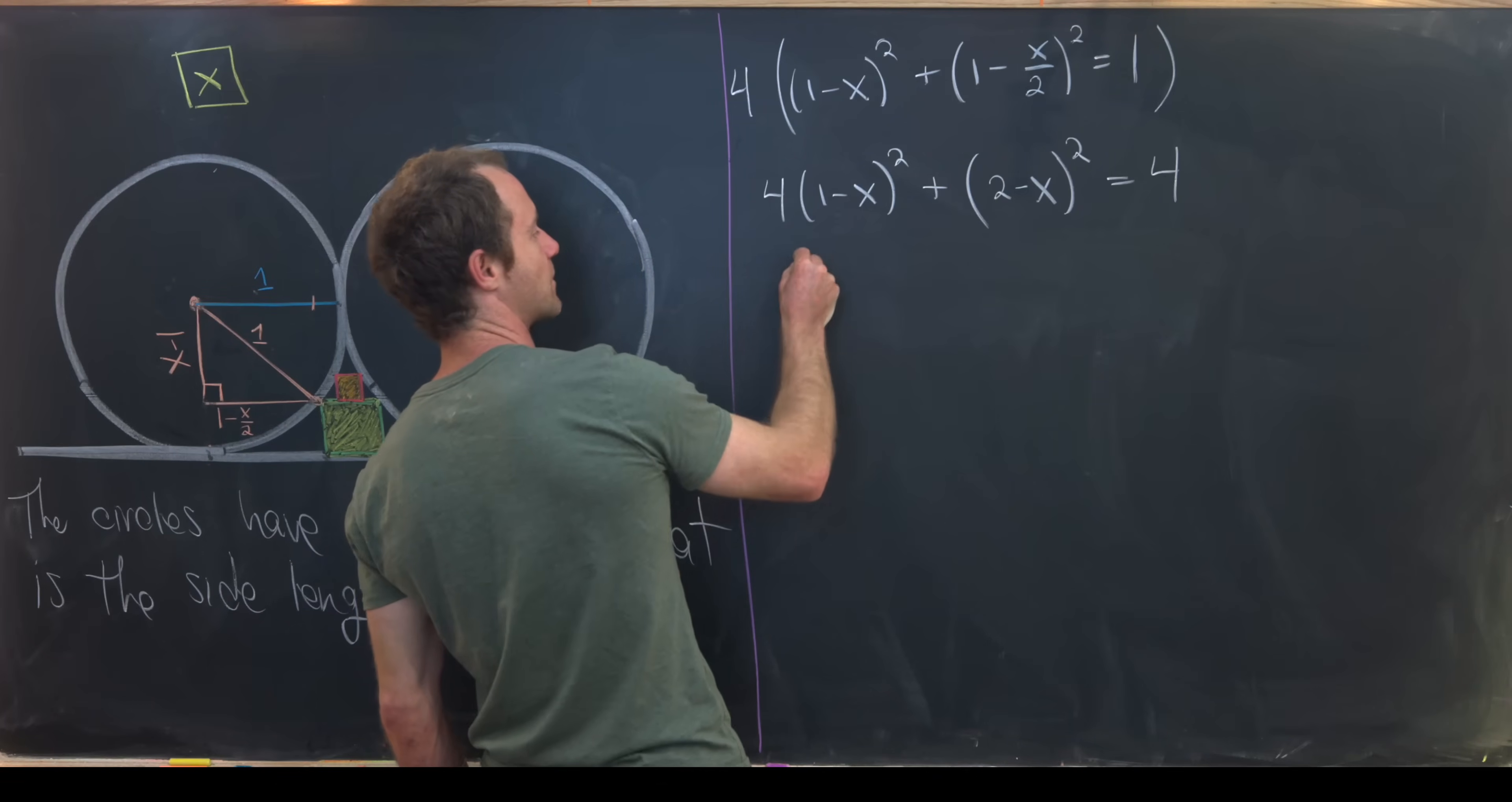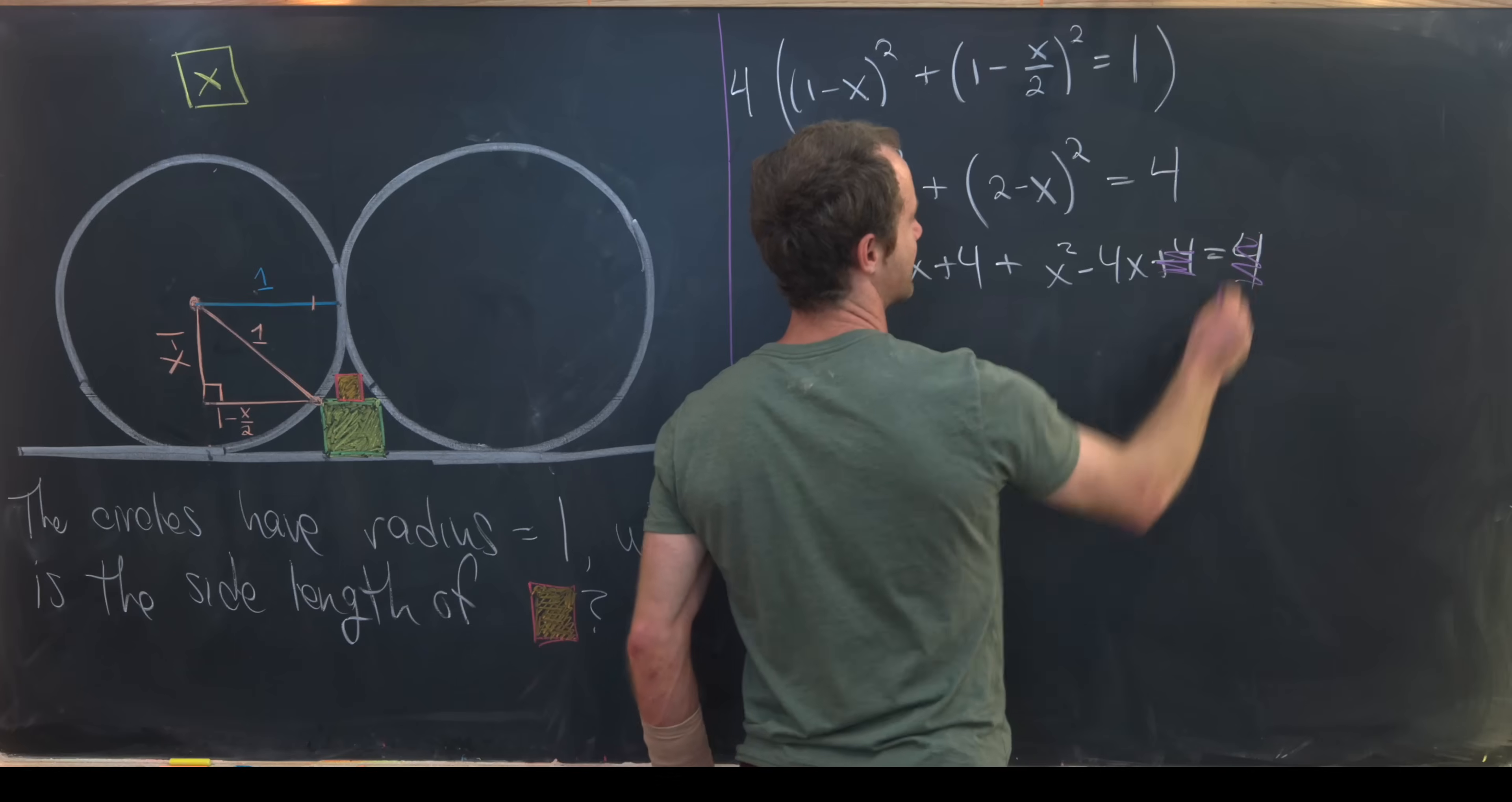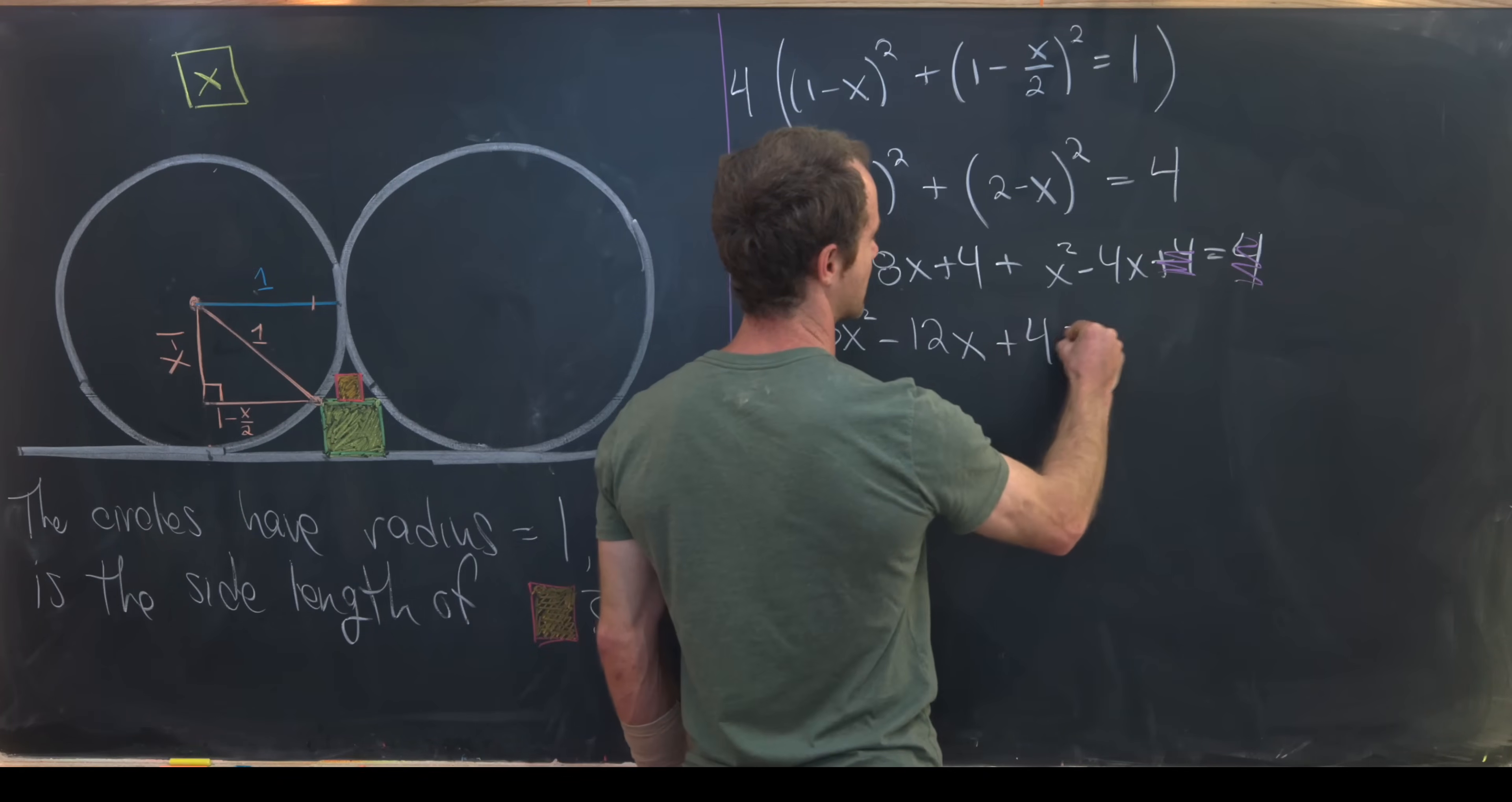Multiplying this out, we'll get 4x² - 8x + 4. And then multiplying this out will give us x² - 4x + 4. That's equal to 4. So we can start simplifying. Notice this 4 and this 4 will cancel. And then we'll have 4x² plus x². That gives us 5x² minus, let's see, 8x minus 4x. That's going to be minus 12x. And then finally plus 4 equals 0.